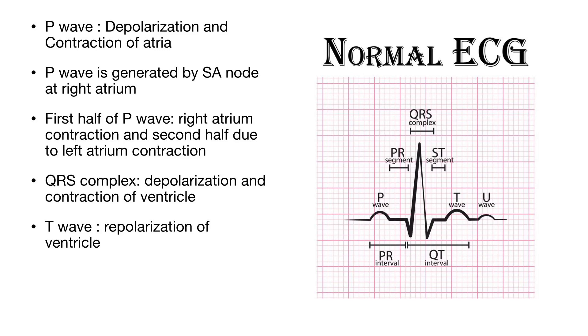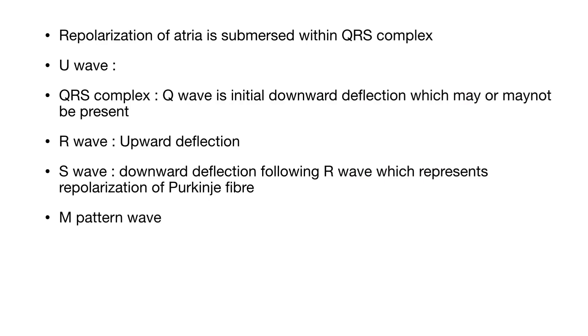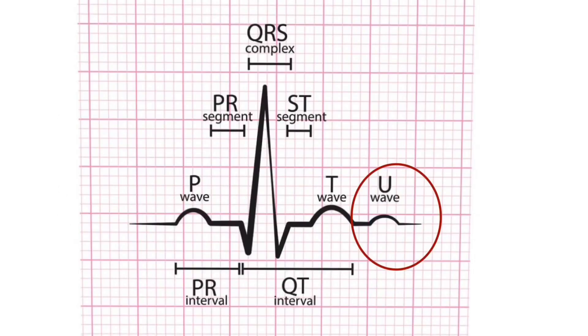QRS complex represents depolarization and contraction of ventricles. T-wave follows QRS complex which represents repolarization of ventricles. Repolarization of atria is submerged within QRS complex and not recorded in routine ECG. Sometimes there is another positive deflection following T-wave which is called U-wave.